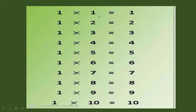This is the table of one. You have to repeat after me — I will take a pause after each line, and you have to speak at your home with me. One one the one. One two the two. One three the three. One four the four. One five the five. One six the six. One seven the seven. One eight the eight. One nine the nine. One ten the ten.